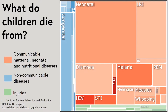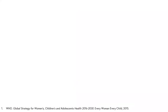Now that we know how many children die and where they die, the final part of our question is: what do children die from? To find the answer, we turn to the Global Burden of Disease Study — a huge piece of work that estimates the causes of death around the world for adults as well as children on an annual basis. The whole area of the chart represents all deaths of children under 5 in 2015, and the size of each rectangle represents the proportion due to each cause. This is split into three overarching categories: in red, communicable, maternal, neonatal and nutritional diseases — the largest group; in blue, non-communicable diseases; and in green, injuries.